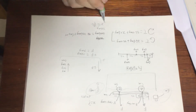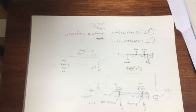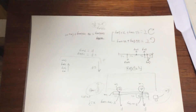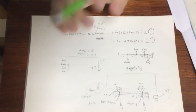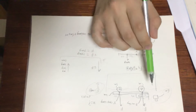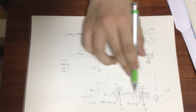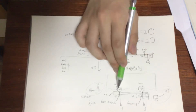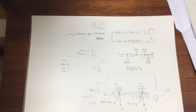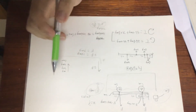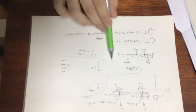So X equals 10/3 L — that is the answer. The question was asking: given that this bar is still and not accelerating, where would we have to place a weight of a certain mass on the bar so that it remains still?